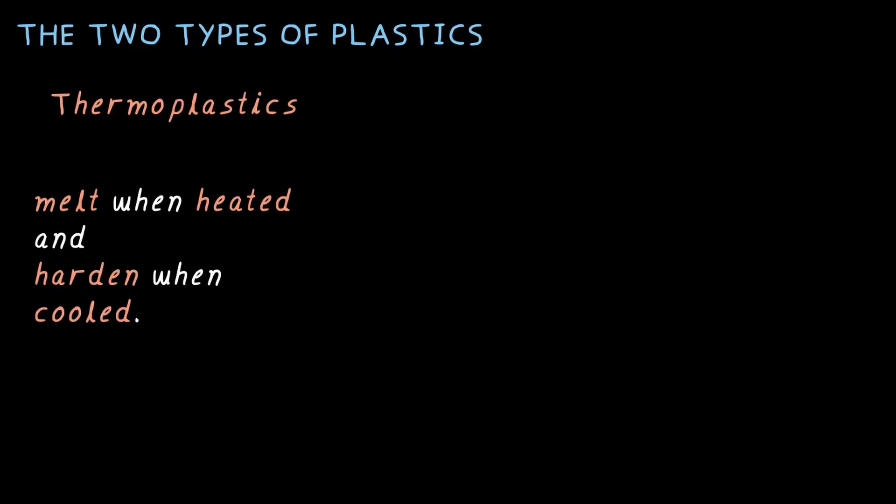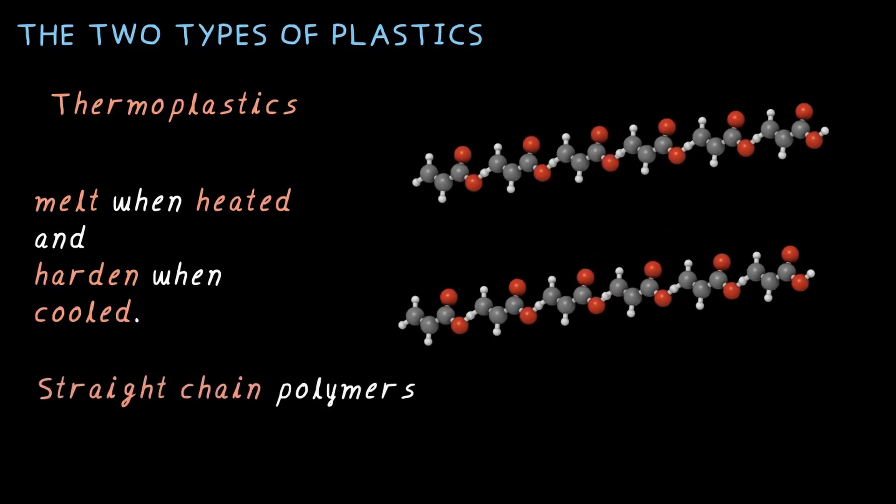What makes them so special? Well, these thermoplastics have a straight chain structure. As you see here in the diagram, these are straight long chains. That's how they look at a microscopic level. And here's the best part: since they can melt and be reshaped, thermoplastics can be recycled. That's a super important property because it helps reduce plastic waste.